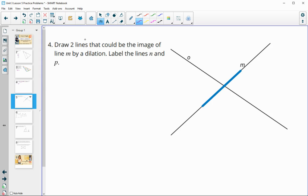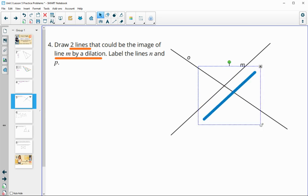Number four. Draw any two lines that could be images of line M by a dilation, label those lines N and P. So remember, when lines are dilated, they're dilated to themselves or to parallel lines.